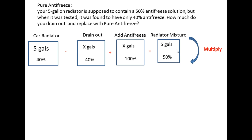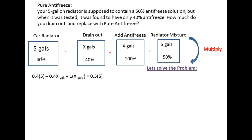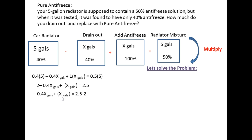Now that we have our boxes set up, all we do is multiply. We have 0.4 times 5, minus 0.4 times x, plus 1.0 times x, equals 0.5 times 5. That gives us: 2 minus 0.4x plus x equals 2.5.